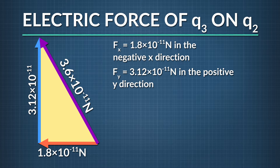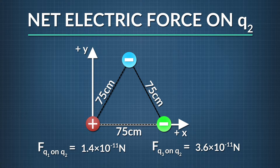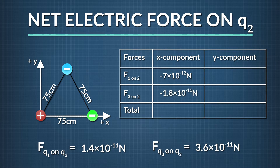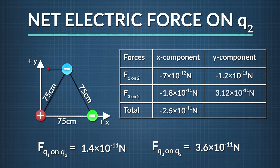Now we are ready to solve for the total magnitude and direction of the electric force on q2 from q1 and q3. We'll use a table to add up the x and y components. To find the total force on q2 in the x direction, we add up the x components of the force of q1 on q2 and q3 on q2. This equals 2.5 times 10 to the negative eleventh newtons in the negative x direction. To find the total force in the y direction, we add the y components, which equals 1.92 times 10 to the negative eleventh newtons in the positive y direction.